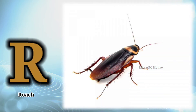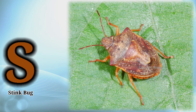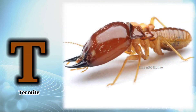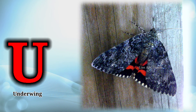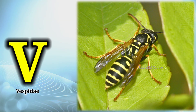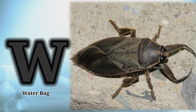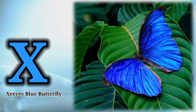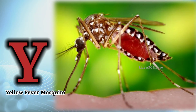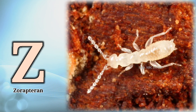R is for Roach. V is for West Team. W is for Water. Yellow. Blue.